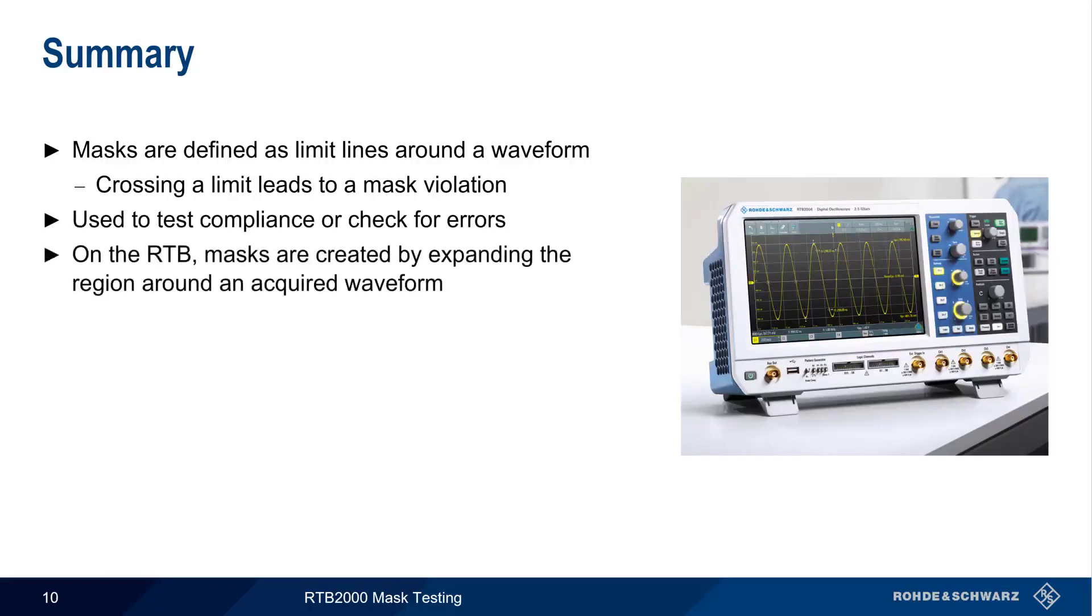On the RTB, masks are created by first acquiring a waveform, and then expanding or scaling the region around this acquired waveform. This can be done in several different ways. Once the mask is created, a mask test can be run, which yields both counts and percentages of compliant and non-compliant waveforms.